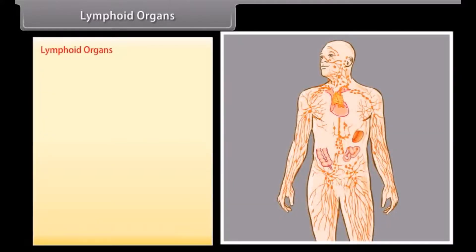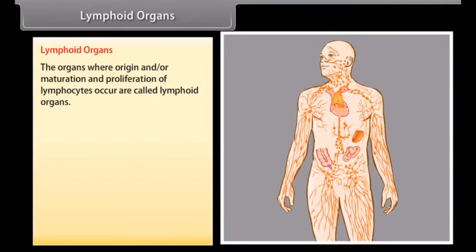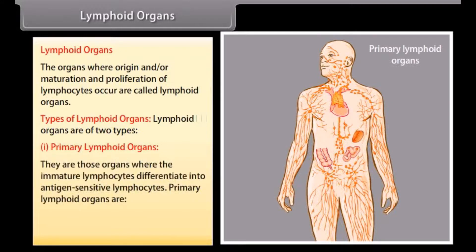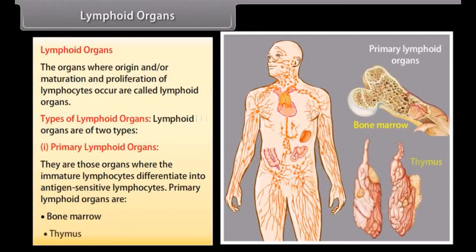The organs where origin and/or maturation and proliferation of lymphocytes occur are called lymphoid organs. Lymphoid organs are of two types: primary lymphoid organs and secondary lymphoid organs. Primary lymphoid organs are those where immature lymphocytes differentiate into antigen-sensitive lymphocytes. Primary lymphoid organs are bone marrow and thymus.